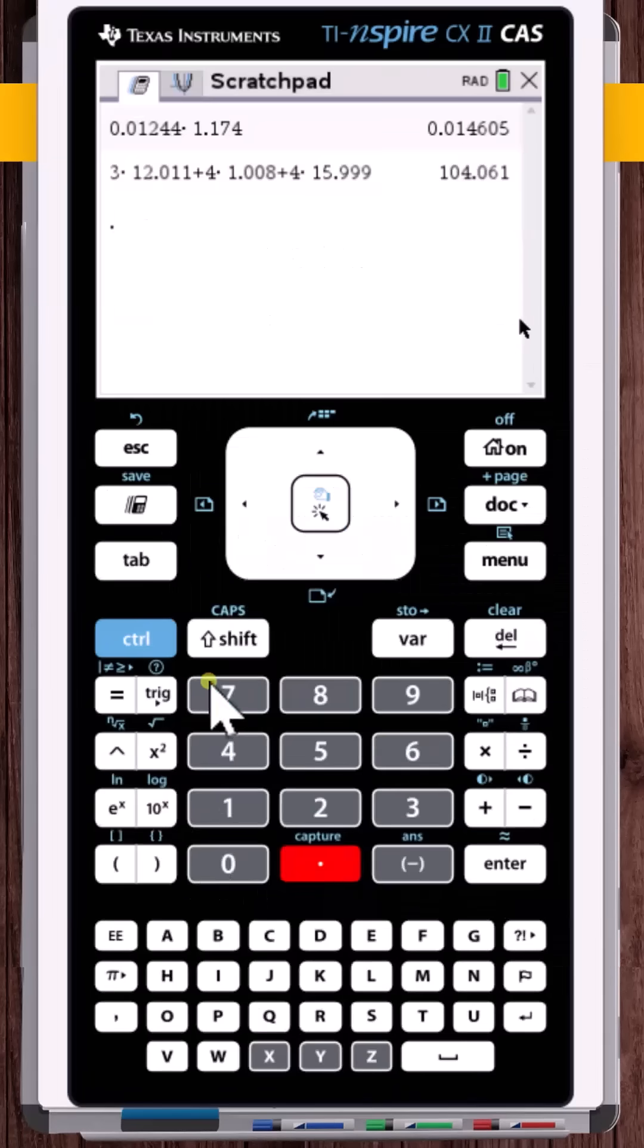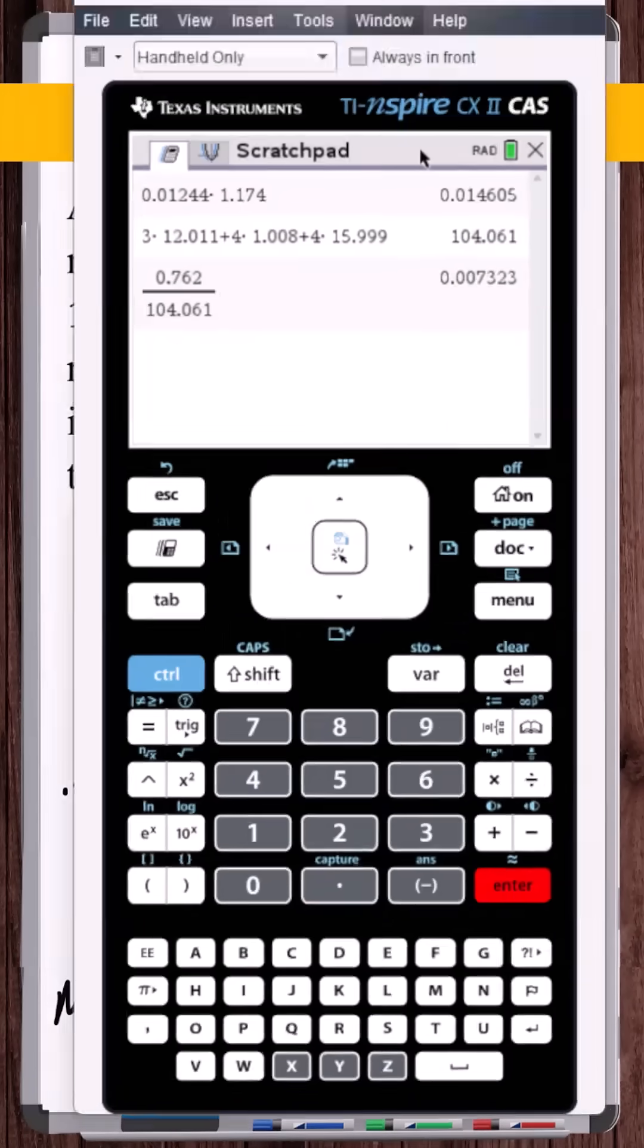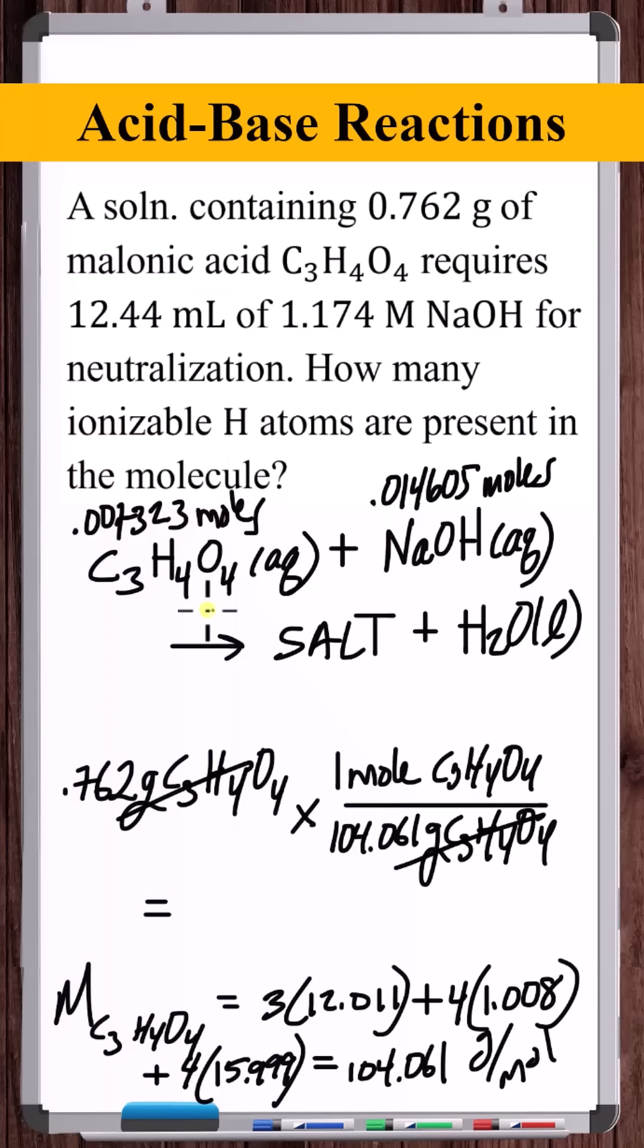So doing this multiplication, 0.007323 moles of malonic acid were reacted with to neutralize this solution.